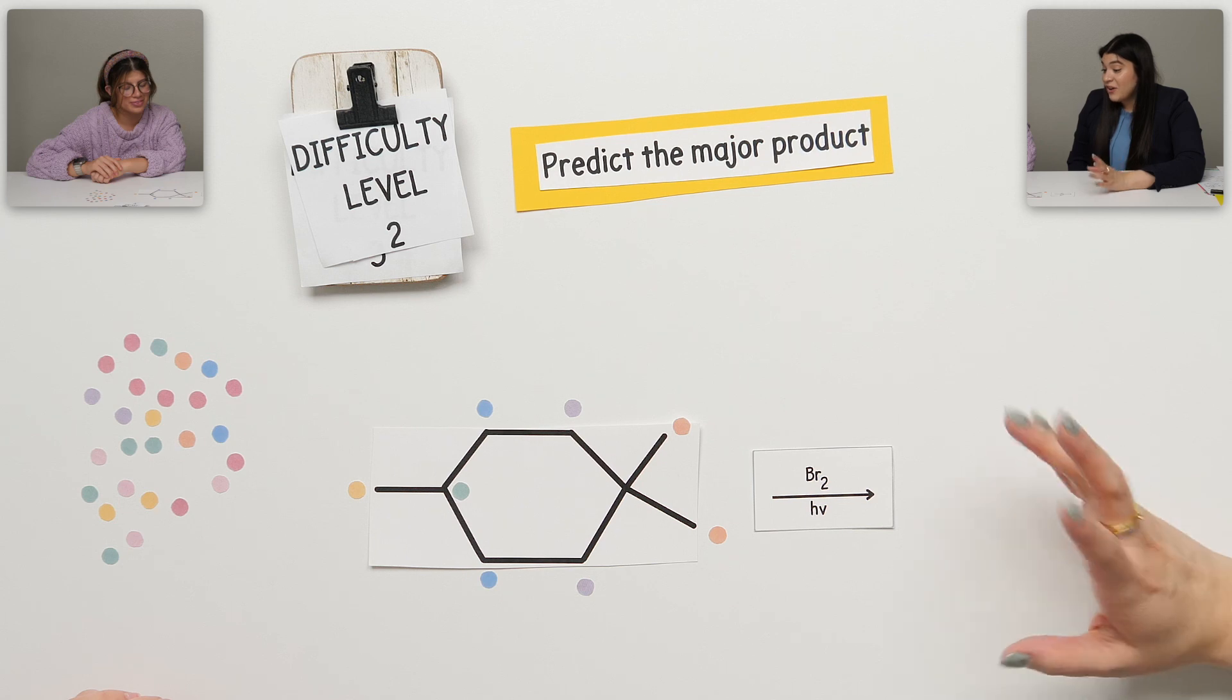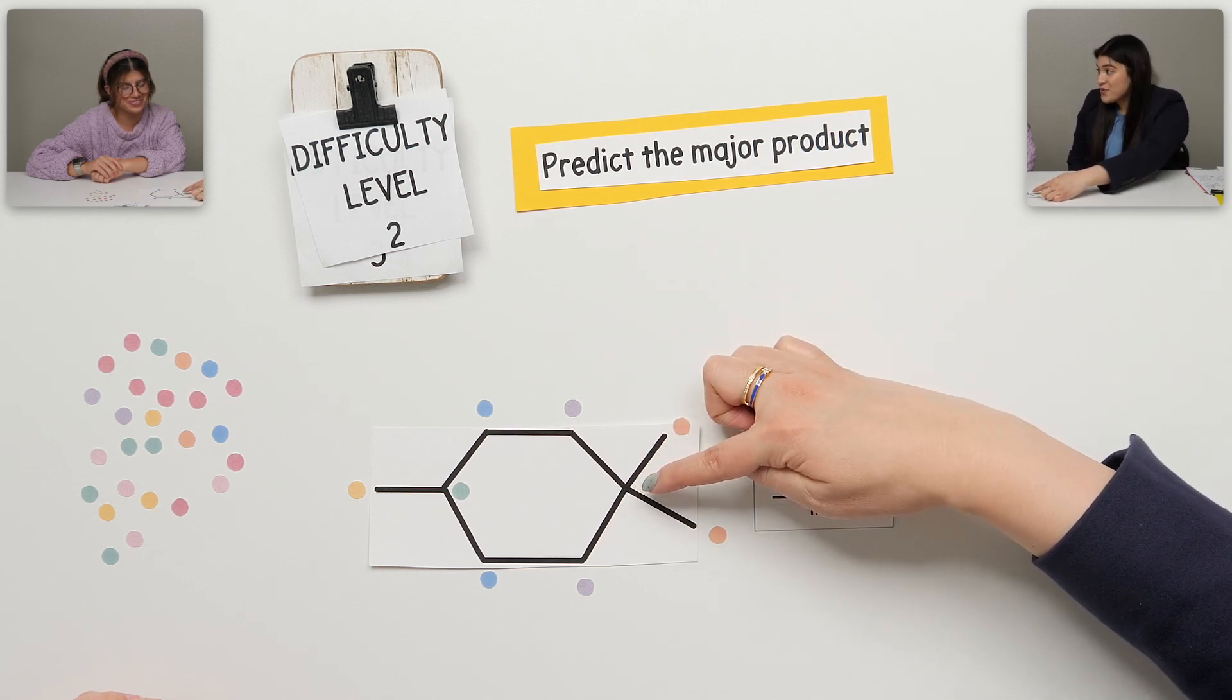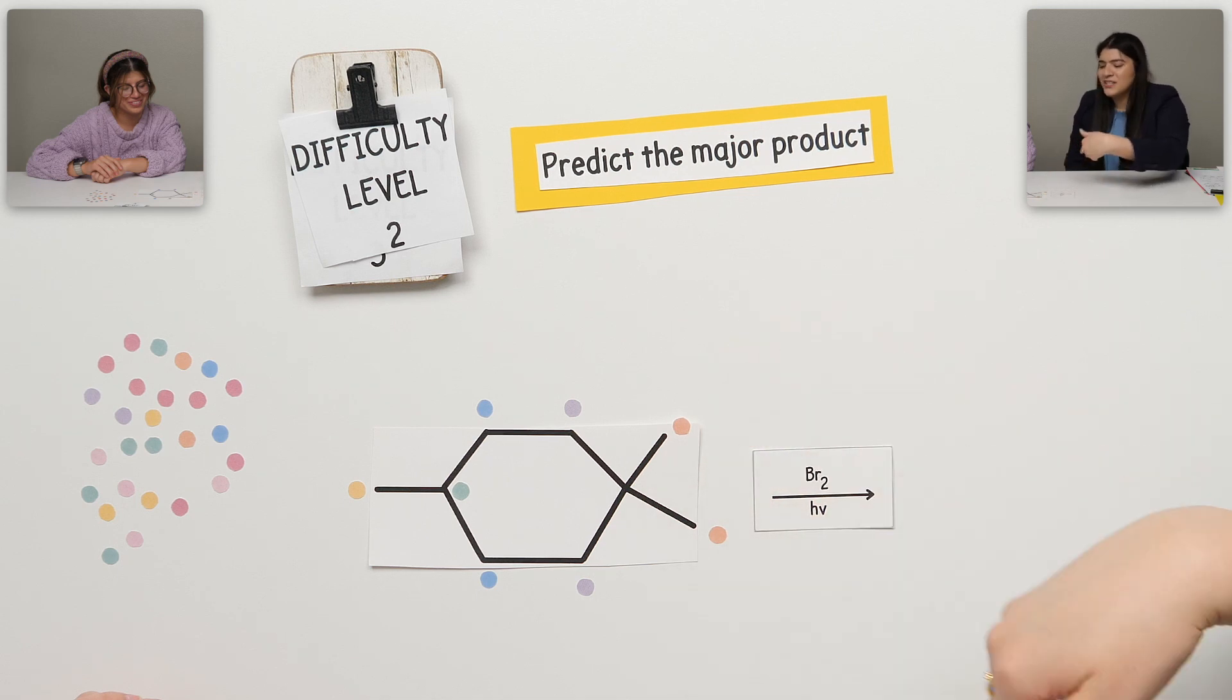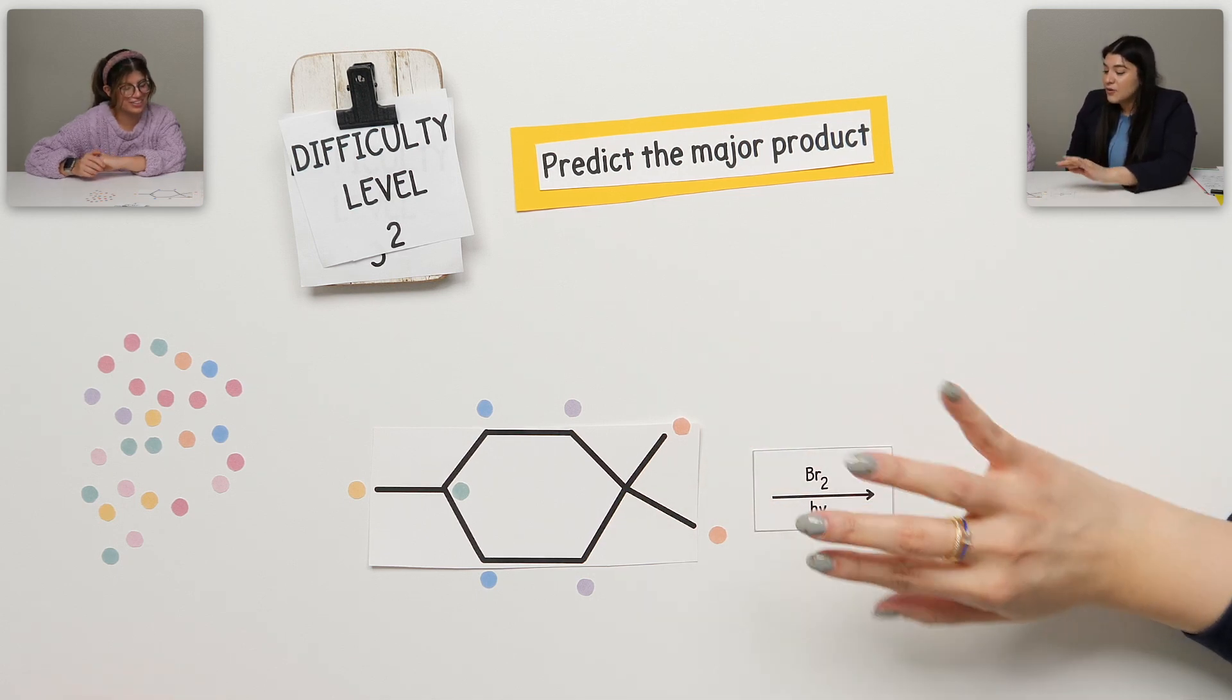Great! I loved that you were not fooled by this. A lot of people would have been and said, 'Oh, I can place it at any carbon.' That's not true. You can only place or have this radical form when there is a hydrogen available.